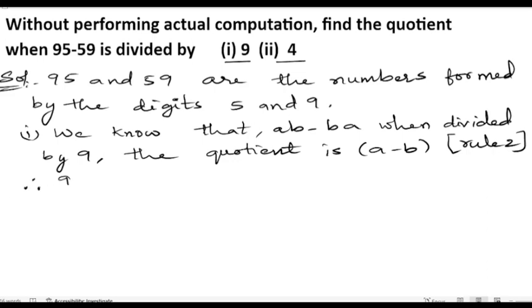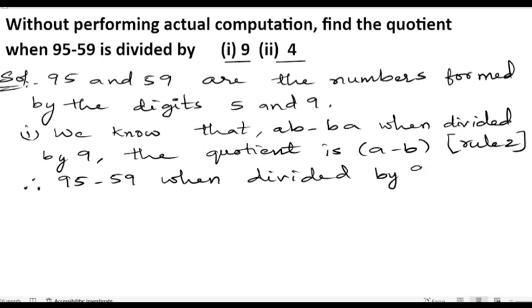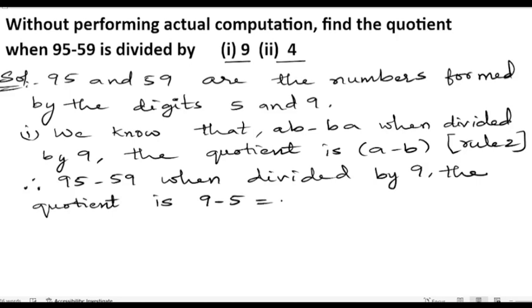Therefore, 95 minus 59, when divided by 9, the quotient is 9 minus 5, that is 4. Now the second part is dividing this number by 4.